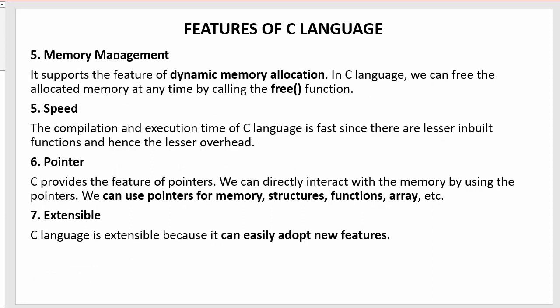The fifth feature is memory management. C supports the feature of dynamic memory allocation. In C language, we can free the allocated memory at any time by calling the free() function. Dynamic memory allocation is an important feature that allows the programmer to allocate memory at runtime. With this technique, we can release the memory whenever we want. If we no longer require any allocated memory, we can easily de-allocate it using the free() function.